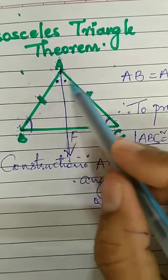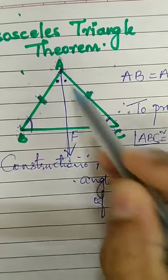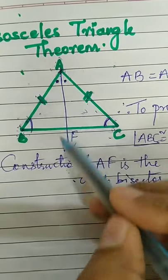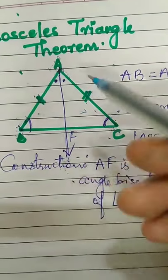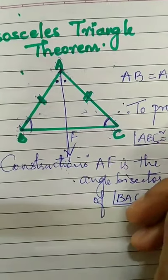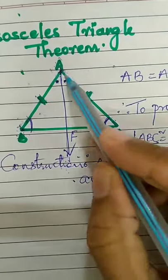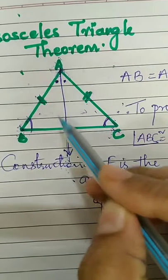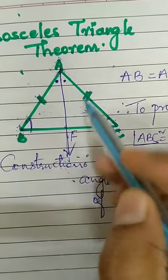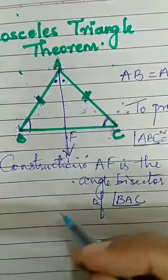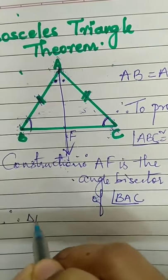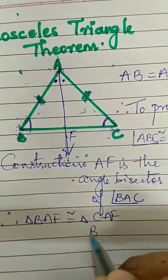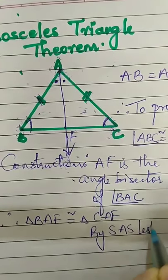Angle BAC is divided into two equal parts: angle BAF and angle CAF. Now, take these two triangles and prove them congruent. In triangle BAF and triangle CAF: AB is congruent to AC (given), angle BAF congruent to angle CAF (construction), and we have the common side AF congruent to AF. So both the triangles are congruent by SAS test.